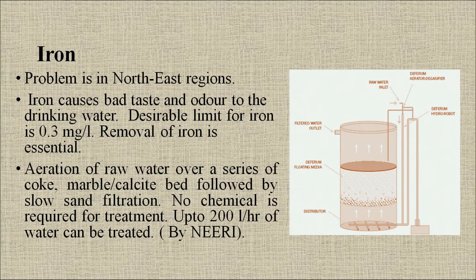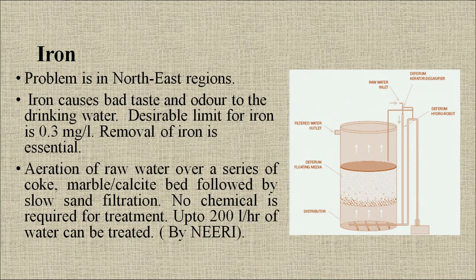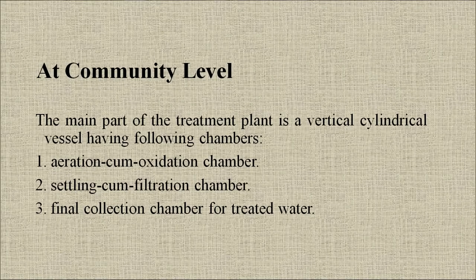Iron is mostly present in the North East region of India. It causes bad taste and odour in drinking water; the desirable limit is 0.3 mg/L. Removal of iron is done by aeration of raw water over a series of coke, marble and calcite beds followed by slow sand filtration. No chemicals are required and up to 200 liters per hour can be treated. At community level, the main parts of the treatment plant include an aeration-cum-oxidation chamber, a settling-cum-filtration chamber and a final collection chamber for treated water.